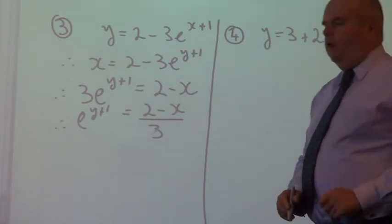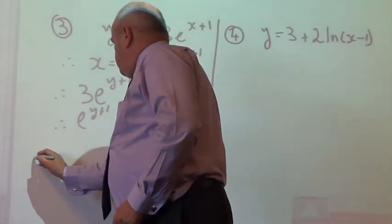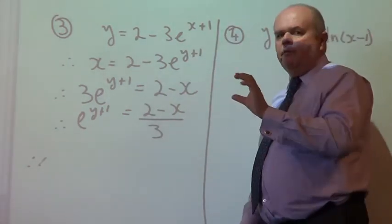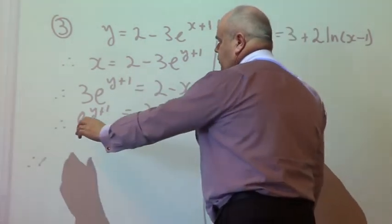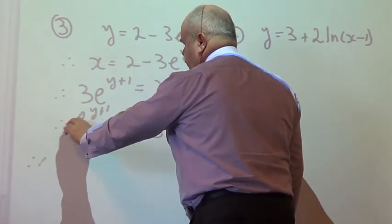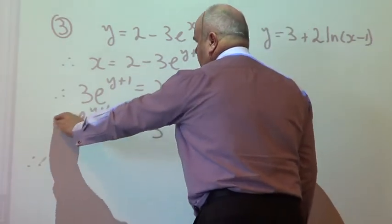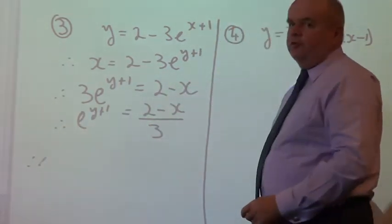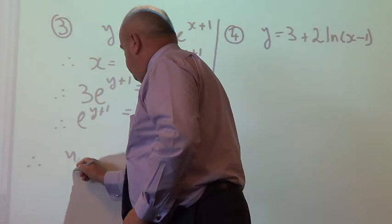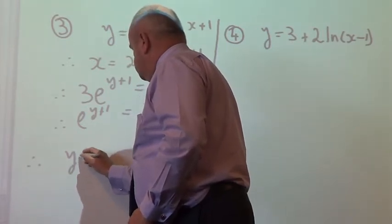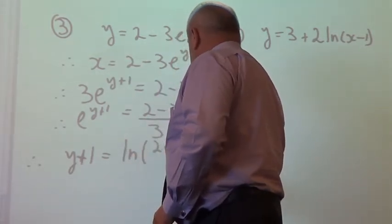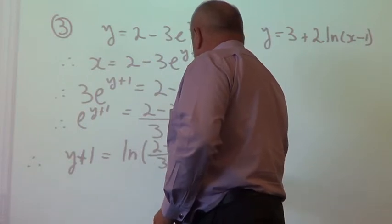The next step is to take logs of both sides. So, therefore, now when I take logs of both sides, you can predict what's going to happen here. Unlike the first example, have a look at that if you're a bit unsure of what I'm about to do. But when I take logs of both sides, really I'm going to take that down there, and so I'm going to write ln of that, and then take the y plus 1 down there, and then the ln will cancel itself out. So you can get used to just writing down the exponent there. And ln 2 minus x on 3.